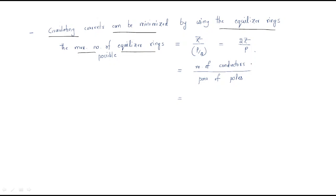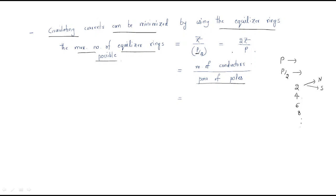In this formula, Z is the number of conductors and P by 2 is the pair of poles, where P is the number of poles. Generally poles are available as two poles, four poles, six poles, and so on — two poles means one north and one south, four poles means two north and two south, six poles means three north and three south. So the maximum number of equalizer rings is Z by P.